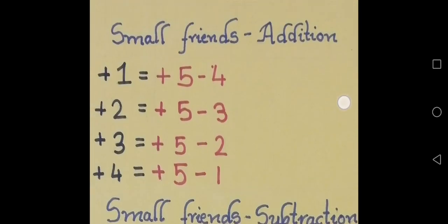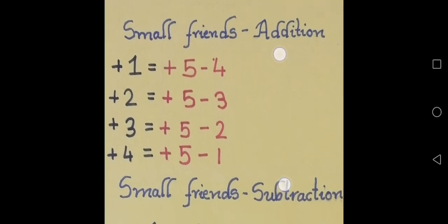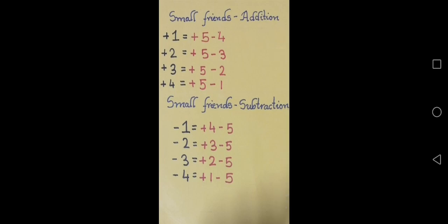For small friends addition: plus 1, the technique is plus 5 minus 4. Plus 2 is plus 5 minus 3. Plus 3 is plus 5 minus 2. And plus 4 is plus 5 minus 1. That's it, thank you.